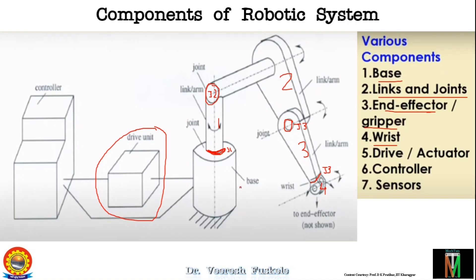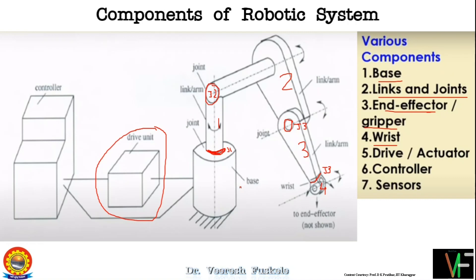If the load requirement is more, gear and chain drives don't suffice, so we move to hydraulic drives — like the piston-cylinder arrangements seen in a JCB machine with oil inside. There are also pneumatic drives driven by compressed air. When load capacity is low, electrical drives such as DC motors are used. Combinations like electro-hydraulic or electro-pneumatic drives also exist.